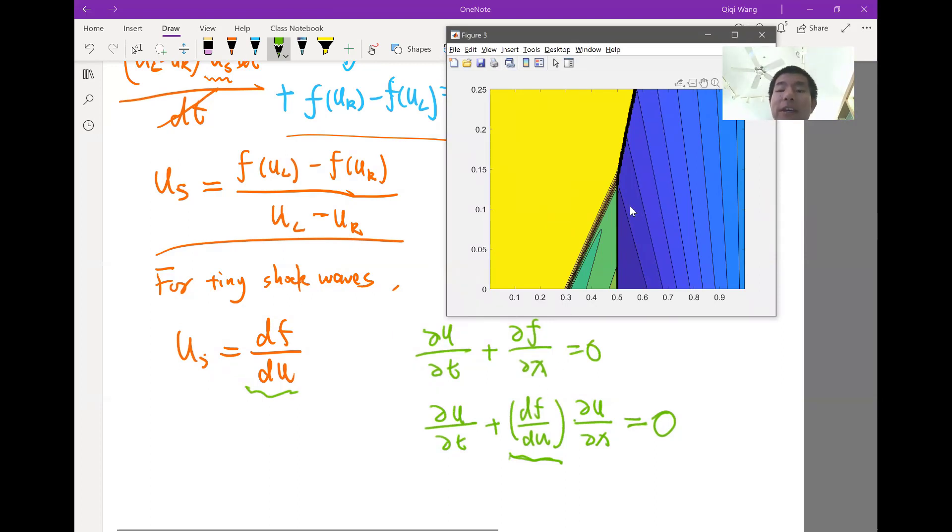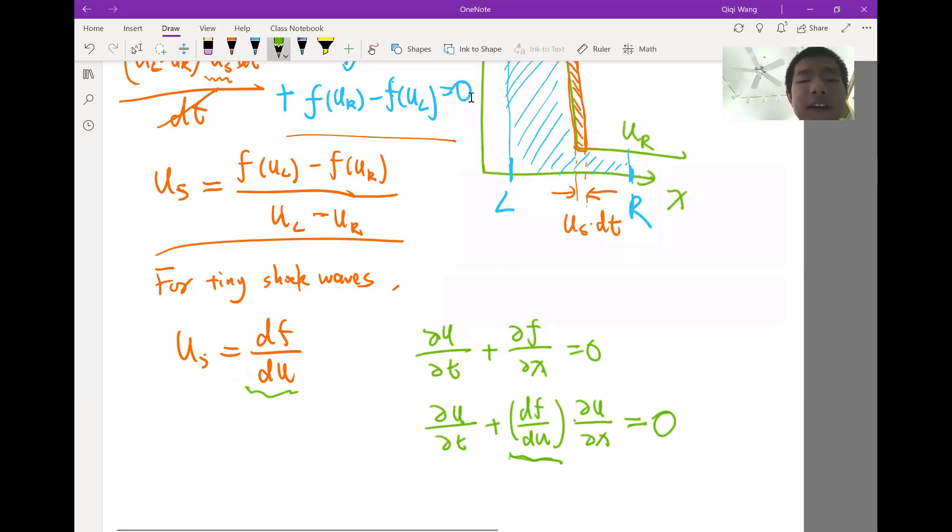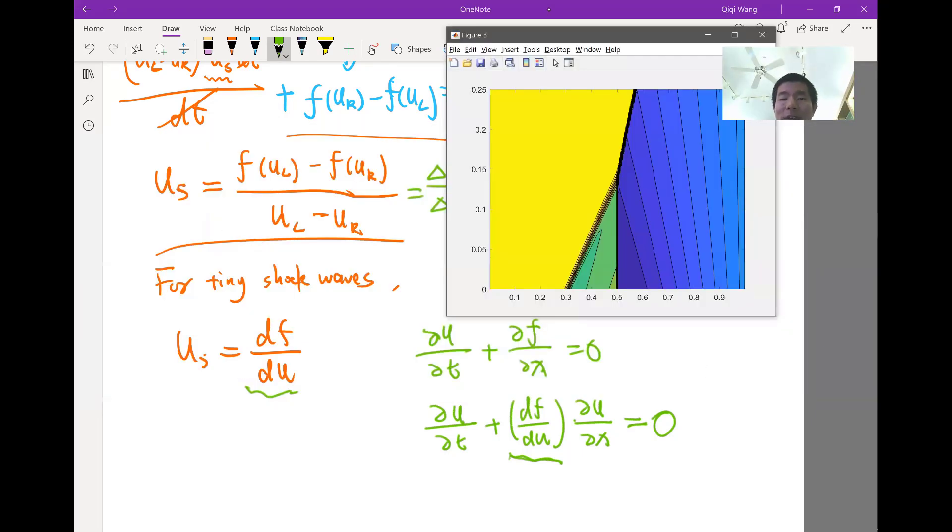If df/du is very positive, it moves towards the right faster. So this df/du actually determines when the solution is continuous. It determines how fast the local solution is moving. And when the solution is discontinuous, then a finite df/du, this is really a delta f over delta u, a finite difference actually determines how fast a shockwave is moving.